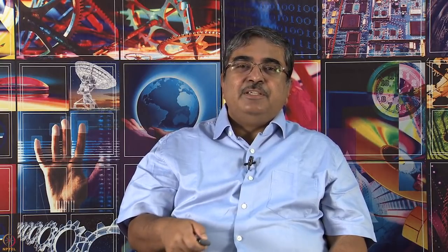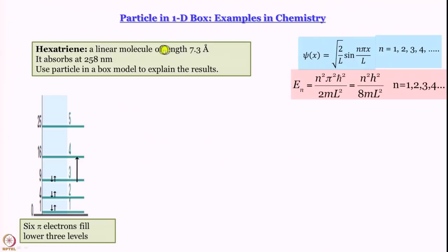The first example we want to discuss is hexatriene, a conjugated molecule which is linear. You can draw a line from beginning to end and the length is 7.3 angstrom. Hexatriene absorbs at 258 nanometers if you look at the absorption spectrum.